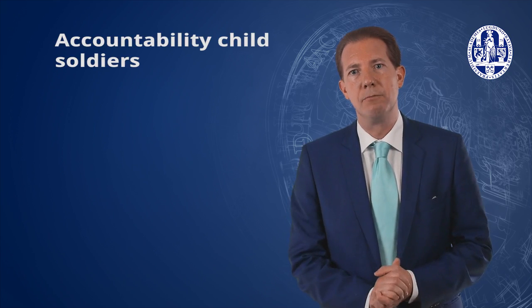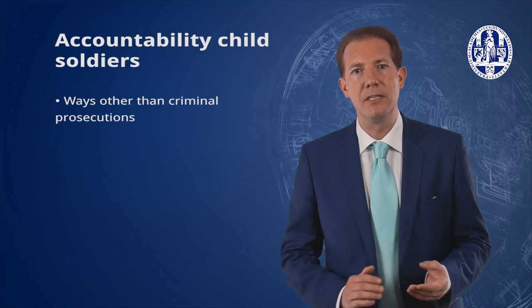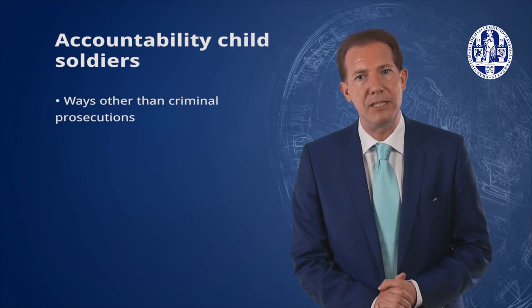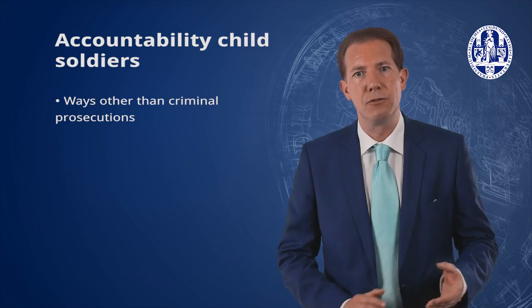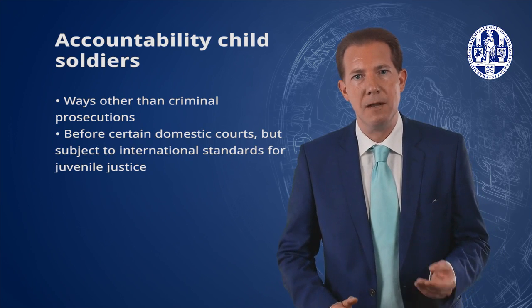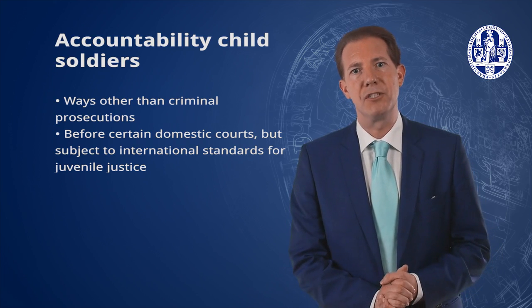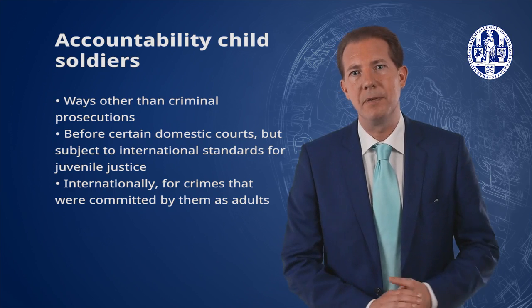There are at least three ways to break the strict victim-perpetrator divide. One approach is to hold child soldiers accountable through means other than criminal prosecution — for instance, transitional justice mechanisms such as truth and reconciliation commissions, in line with the Convention on the Rights of the Child, which encourages states to pursue alternatives to judicial proceedings for children. A second approach is to try child soldiers before domestic courts subject to international juvenile justice standards, though this should be a last resort. A third approach is to hold children accountable internationally only for crimes committed by them as adults — after the age of 18 — which is the approach taken by the ICC in the Ongwen case. In the next module, we will discuss how wrongs are remedied and how the criminal justice system can be improved.